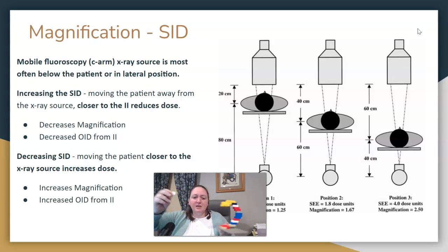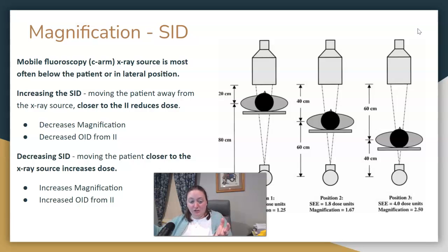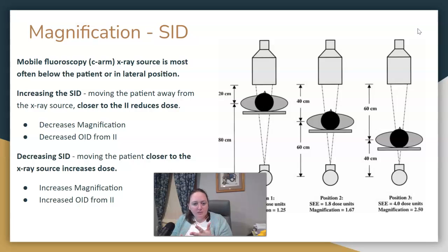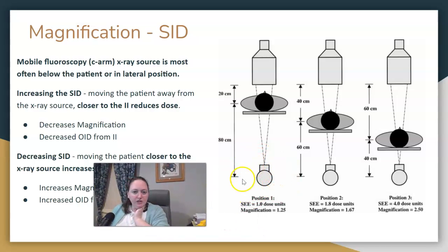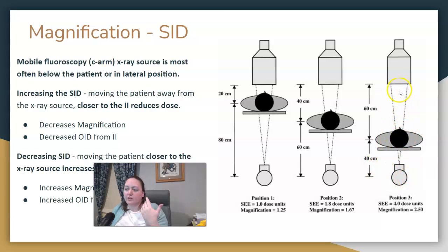Sometimes in the OR with surgical equipment — if you're doing a rodding or T-lift and there's stuff outside the patient — you should not get so close that you're touching those. But for questions about reducing magnification in mobile fluoroscopy, you would want to decrease OID by bringing the image intensifier closer to the patient, not the source on the bottom. The bottom of your C-arm is your x-ray source, and having the patient as close to the image intensifier as possible decreases OID. As the patient gets closer to the source, the OID increases.